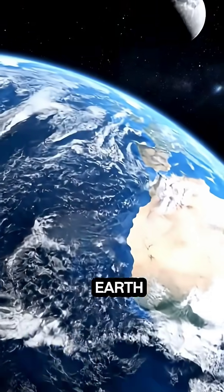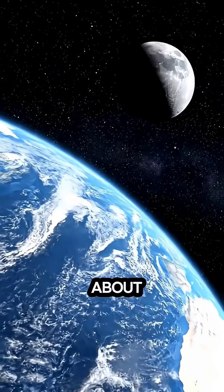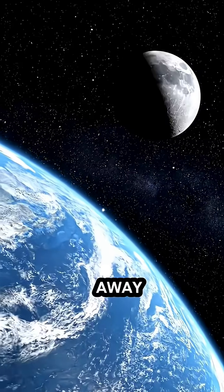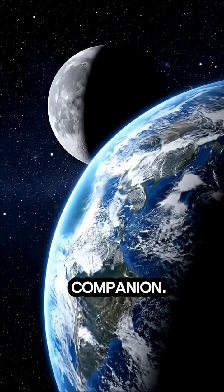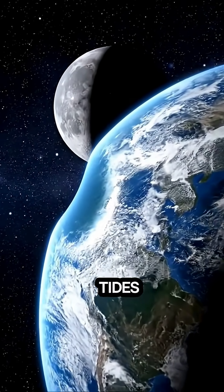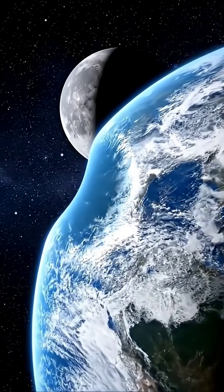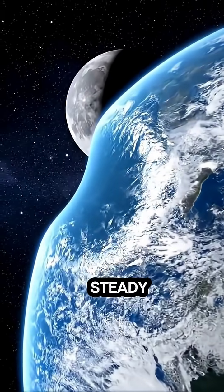Just beyond Earth drifts the Moon, about 384,400 kilometers away. Our constant companion. It shapes the ocean tides and stabilizes Earth's tilt. Keeping our seasons steady through time.